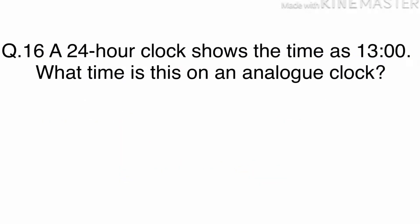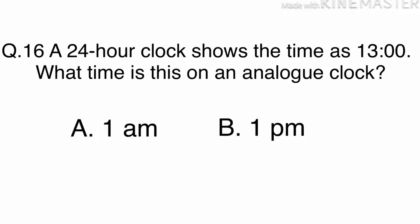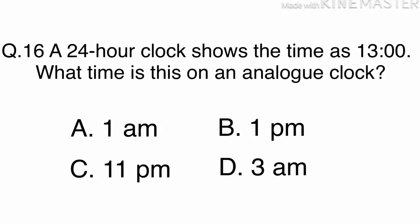Question 16. A 24 hour clock shows the time as 1300. What time is this on an analogue clock? A: 1am, B: 1pm, C: 11pm, or D: 3am.